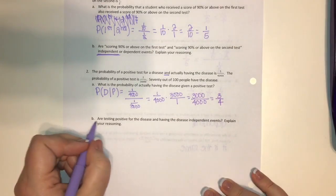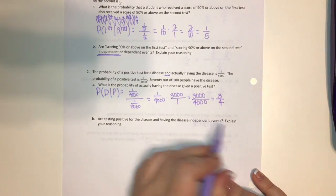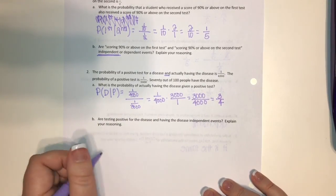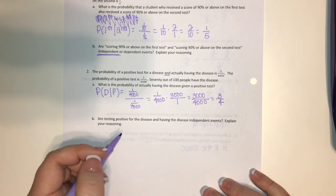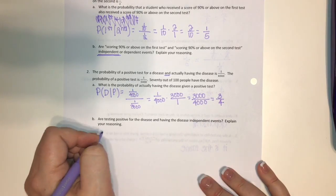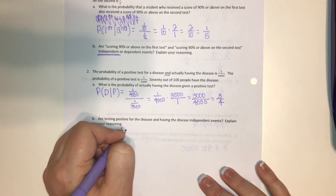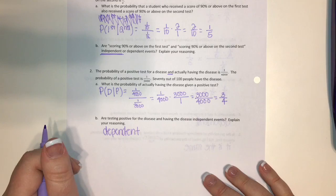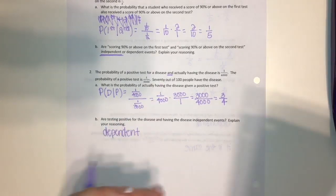Are testing positive for the disease and actually having the disease independent events? I would think these are dependent events. Typically, you would not test positive for a disease if you didn't actually have it, so these events are related to each other.